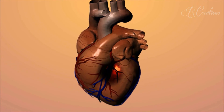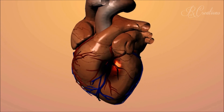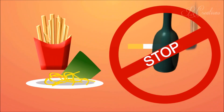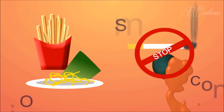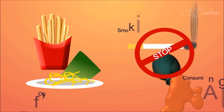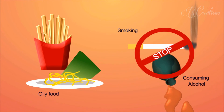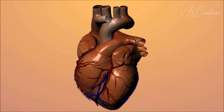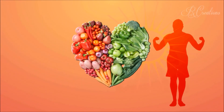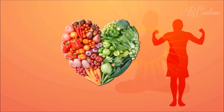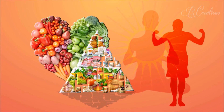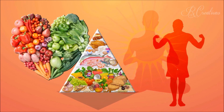The damaged heart no longer pumps blood properly. Coronary heart disease can be prevented by adopting a healthy lifestyle — avoiding alcohol, smoking, and unhealthy food. Combining physical activities with other lifestyle measures, such as maintaining a healthy weight, makes the payoff even greater.